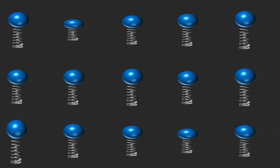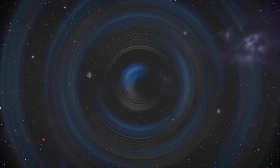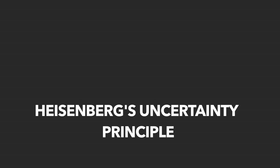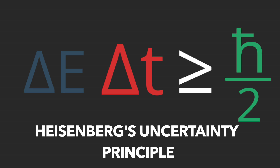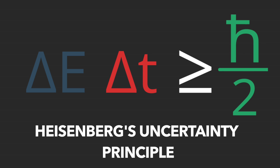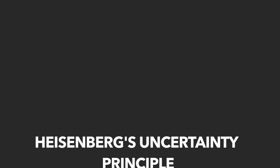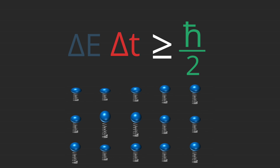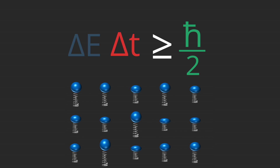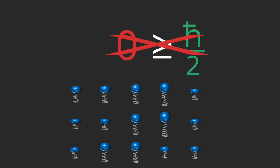Then it affects the other springs around it and everything starts oscillating. The Heisenberg uncertainty principle says that the product of two variables such as energy and time is limited. The springs follow this uncertainty principle, meaning that they will never have energy equal to zero.